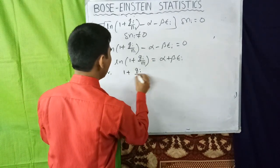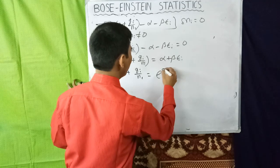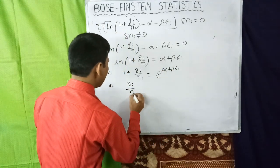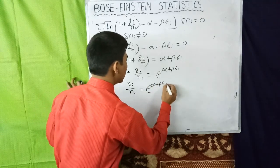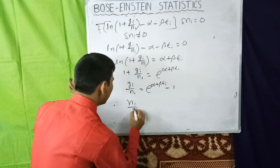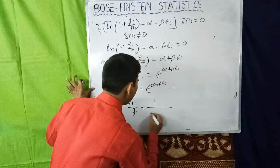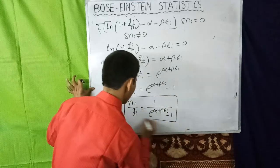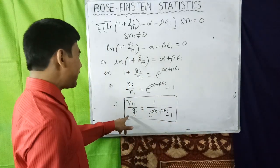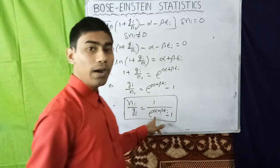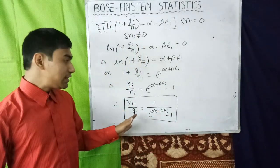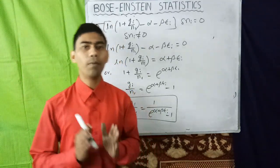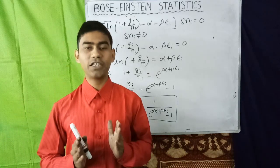Since δNᵢ ≠ 0, this term will be zero, so we may write ln(1 + Gᵢ/Nᵢ) = α + β·εᵢ, which gives 1 + Gᵢ/Nᵢ = e^(α + β·εᵢ), or Gᵢ/Nᵢ = e^(α + β·εᵢ) - 1, hence Nᵢ/Gᵢ = 1 / [e^(α + β·εᵢ) - 1]. This is the Bose-Einstein distribution function for the assembly of bosons. Thank you for watching this video.